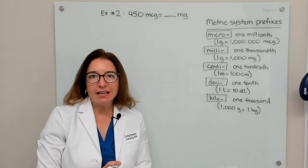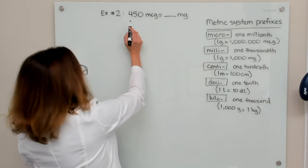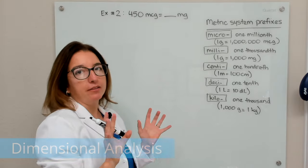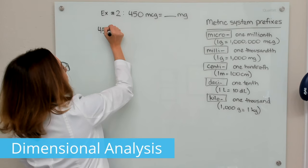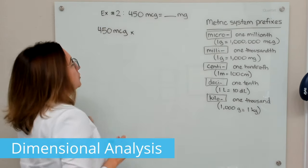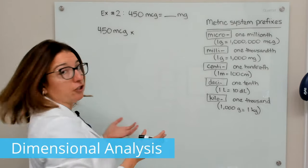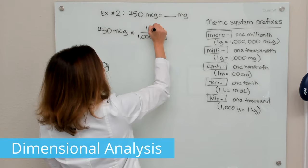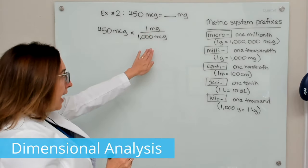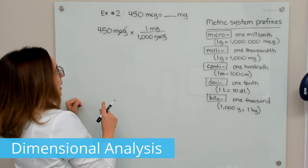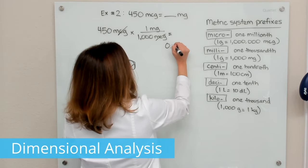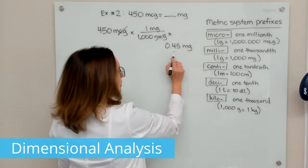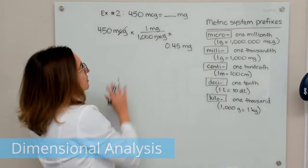Let's now go through our second metric system conversion problem. We have 450 micrograms and we want to convert that to milligrams. Using dimensional analysis, we write down 450 micrograms and multiply by the conversion factor: there are 1,000 micrograms in 1 milligram. Set up the ratio so micrograms cross off, and multiplying out we get 0.45 milligrams — with a leading zero and no trailing zero, which is the correct way to write this number.